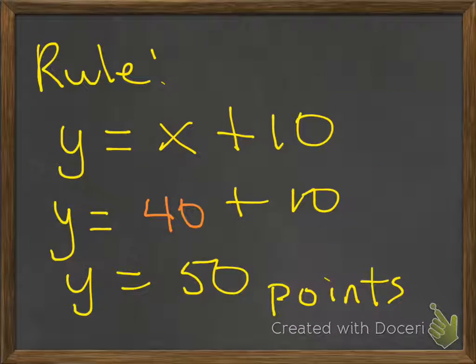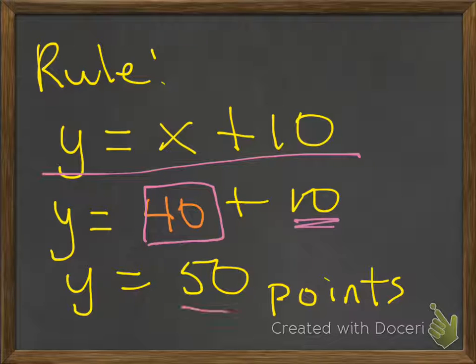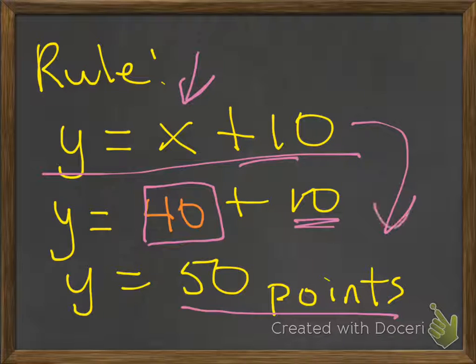So what's the rule? The rule is y equals x plus 10. And as I showed you at the end there, we plugged in 40 plus the 10, we're going to get the 50 points. So our rule is y equals x plus 10. No matter what number we plug into x, as long as we add 10 more, we're going to get the number of points needed.